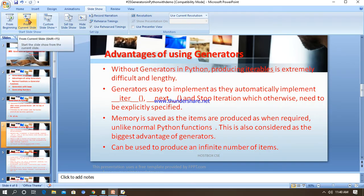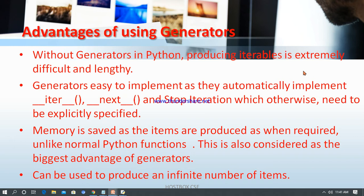What are the advantages of generators? Without generators in Python, producing iterables is extremely difficult and lengthy. Generators are easy to implement as they automatically implement __iter__, __next__, and StopIteration — which otherwise need to be written explicitly. Memory is also saved as items are produced only when required, unlike normal functions. Additionally, generators can be used to produce an indefinite number of items — for example, a multiplication table can be generated using generators.